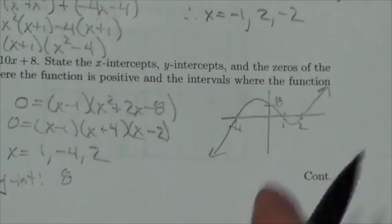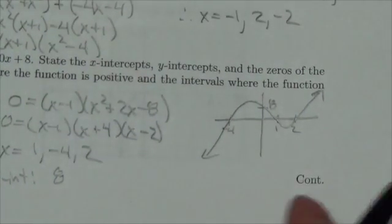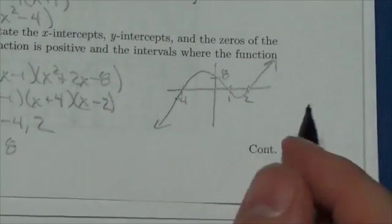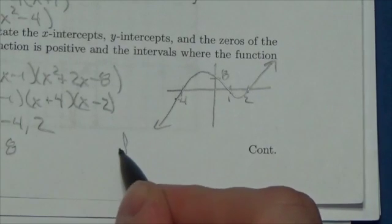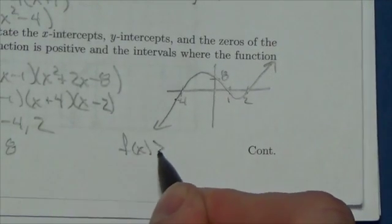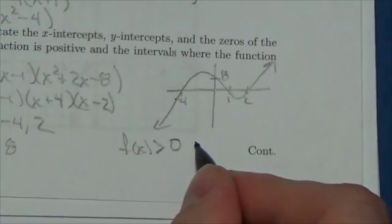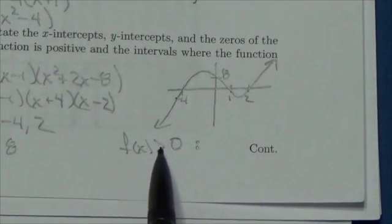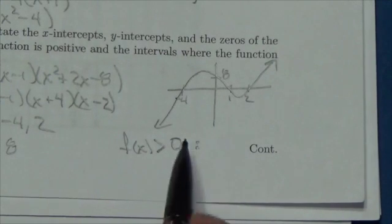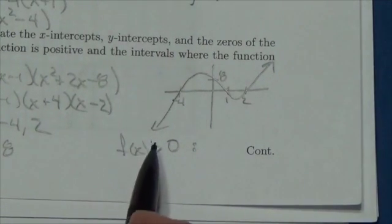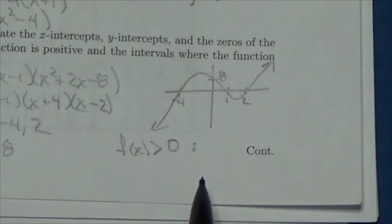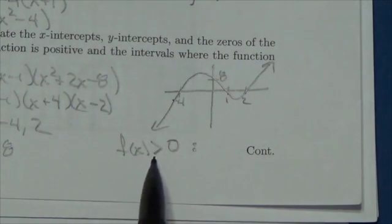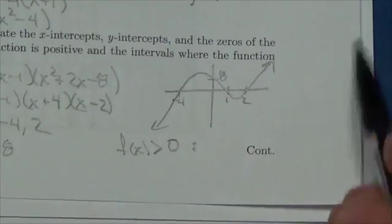Now once I've got that, the question was asking me to identify the intervals where the graph is positive and where the graph is negative, where the function is positive, where the function is negative. So the function is positive. Now I know not everybody is really comfortable with this symbol right here. I know that from experience here. This is our greater than symbol, right? It points to the lower, the smaller amount here. So the function is greater than zero, meaning it's positive. Where? Well, take a look.